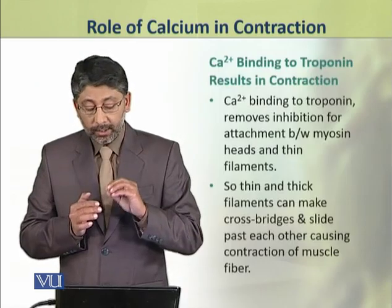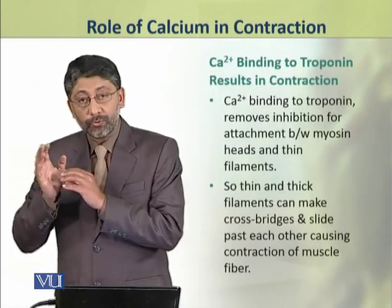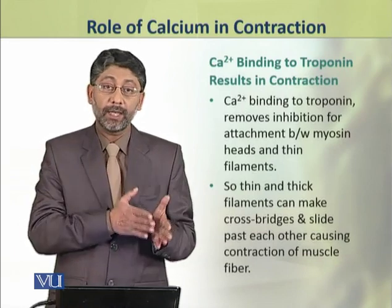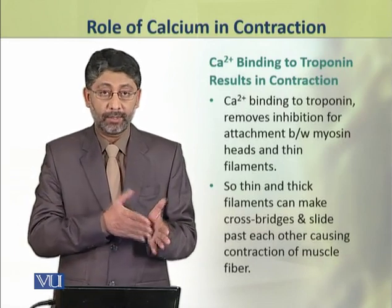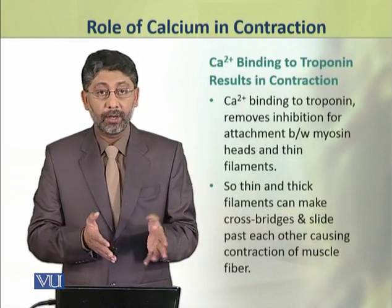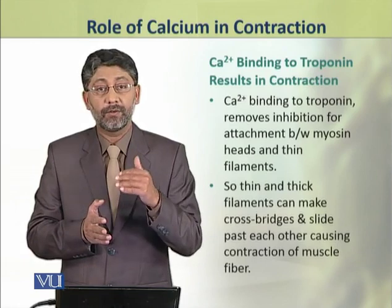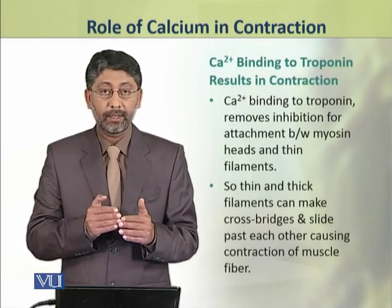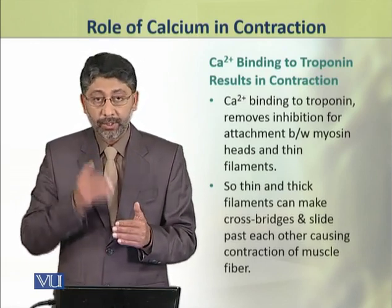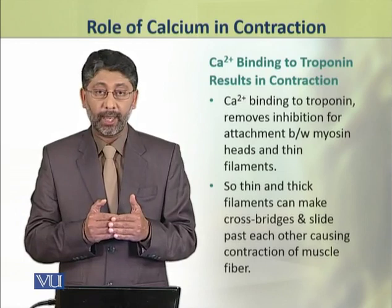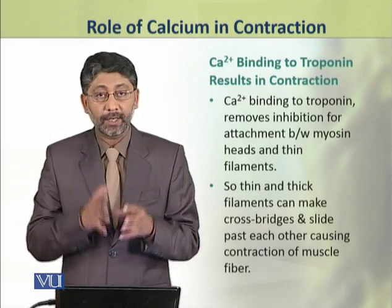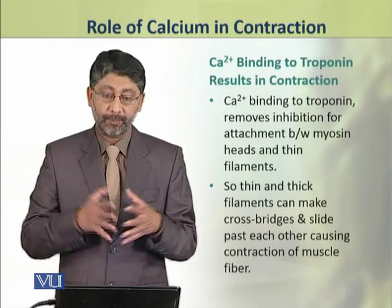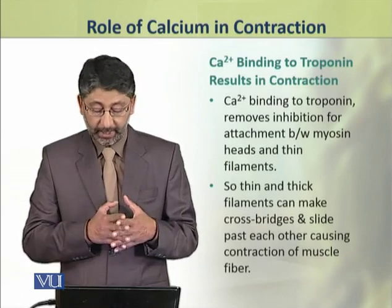The calcium binding to troponin removes the inhibition that was present for binding of myosin with actin. When this inhibition is removed, the myosin heads attach to actin and cross bridges are formed.